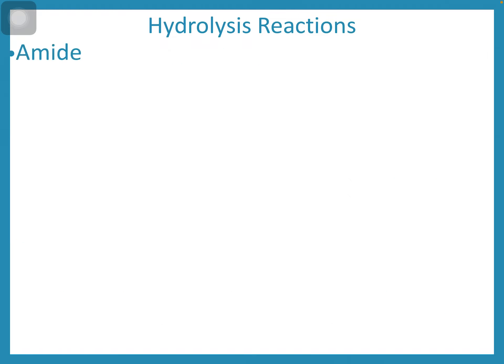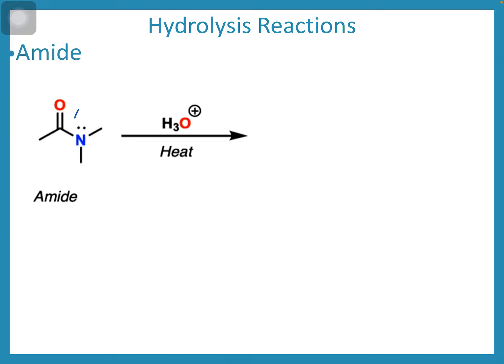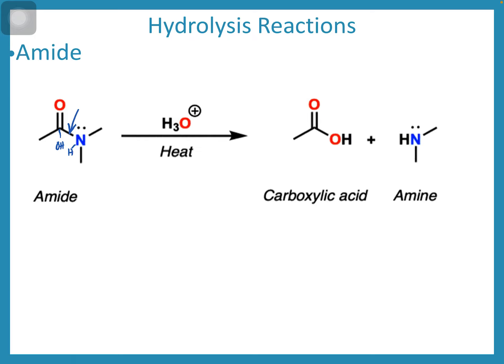We can also break an amide up through adding water. We're going to split the bond over here, hydroxide would be added here, and then a hydrogen added to that nitrogen to create a carboxylic acid and an amine.